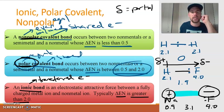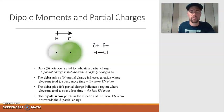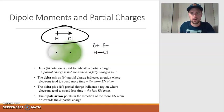This slide reviews the symbology from the previous slide — you have the dipole arrow and the delta notation. A reminder that delta notation and the dipole arrow are only used for polar bonds.